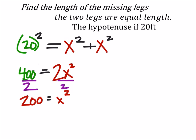And to get rid of the square, I'm just going to square root both sides. So I've got x equals the square root of 200. Now let's look at that a little bit closer.